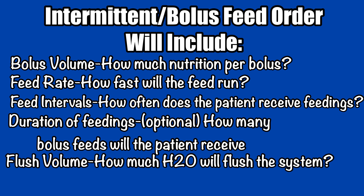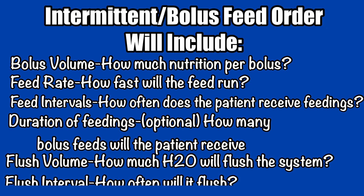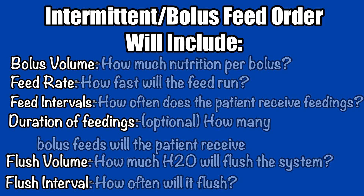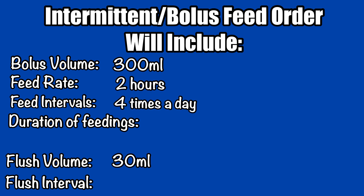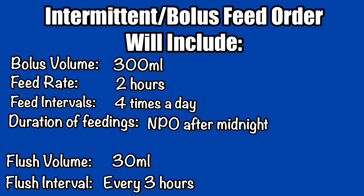You'll have flush information for volume and interval as well. For our programming example, we'll say our order states the patient will receive 300 milliliter feeds over two hours, and they are to receive this four times per day. They should receive a 30 milliliter flush every three hours. We'll also say that the patient is to be NPO for a procedure starting at midnight tonight.